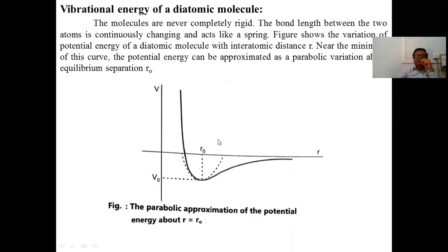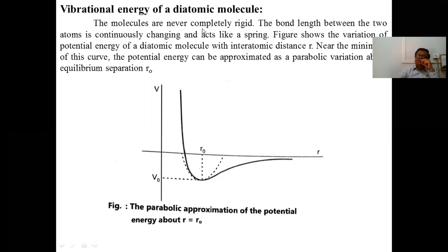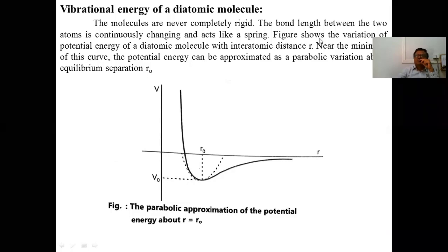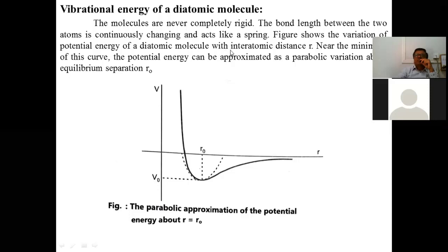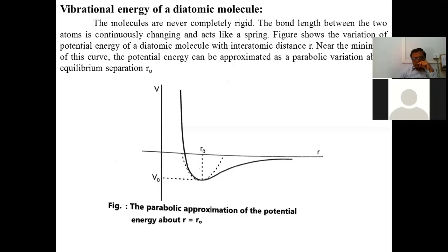The vibrational motion is like spring motion. The molecules are never completely rigid — practically, the bond length between the two atoms is continuously changing and acts like a spring. The figure shows the variation of potential energy of a diatomic molecule with inter-atomic distance r. Near the minimum of this curve, the potential energy can be approximated as a parabolic variation about the equilibrium separation r0.